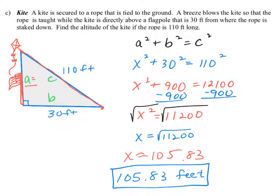You can check this using the Pythagorean theorem. Since 105.83 is a rounded value, plugging it back in won't give an exact result, but it will be very close. So the kite is approximately 105.83 feet high.